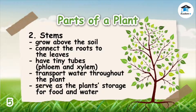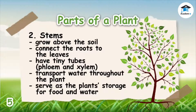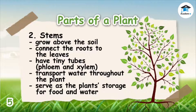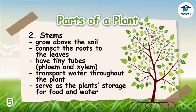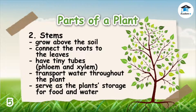Stems grow above the soil. Some stems are hard while others are soft. Stems connect the roots to the leaves of the plant. The stems also have tiny tubes called phloem and xylem, where nutrients and water pass through. The stem also serves as the plant's storage for food and water.